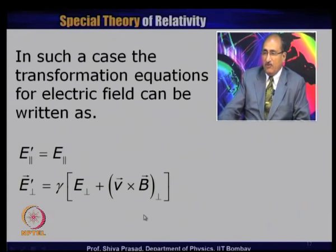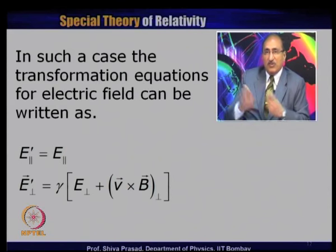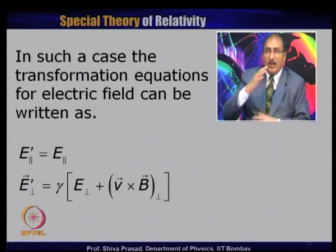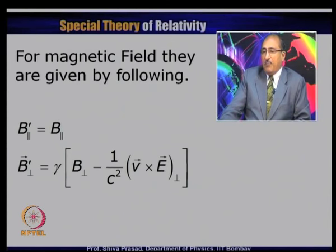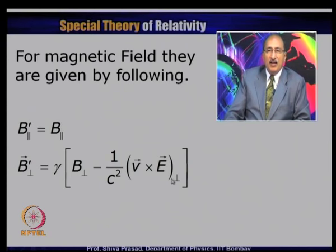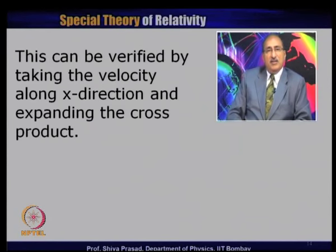The first equation is obvious: along the direction of relative motion the fields do not change, which is true for both electric and magnetic fields since Bx' = Bx as well. It is only perpendicular to the relative velocity that the fields transform — this is the transverse transformation of the fields. For the magnetic field: B_parallel' = B_parallel and B_perpendicular' = gamma·(B_perp − V × E/c²)_perp. This can be verified by taking velocity along x and expanding the cross product, giving the same three equations derived earlier.